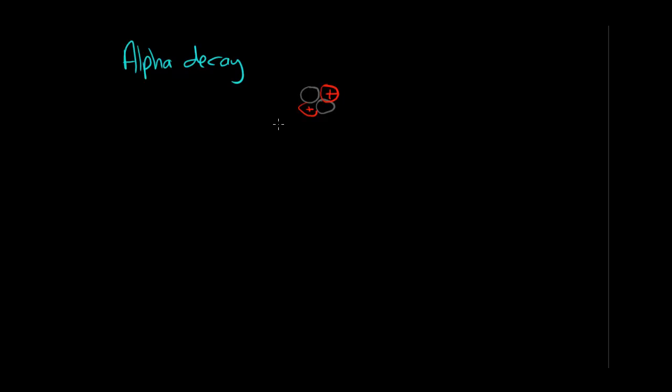And an alpha particle is ejected from the nucleus of usually quite large and unstable nuclei. So I'm not going to spend ages doing a nucleus here, but hopefully you'll get the idea. So we've got a rather large nucleus here. The larger it is, the more likely it is to decay. And we've got some neutrons in there of course as well.